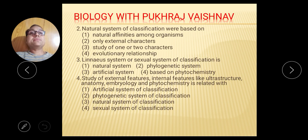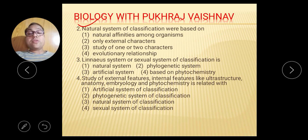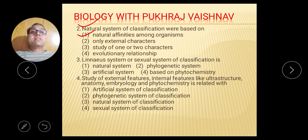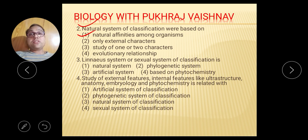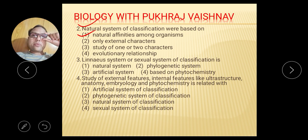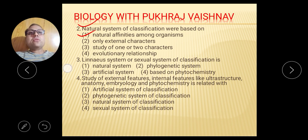Second question: Natural system of classification was based on — obviously it is based on natural affinities. So option number 1 is the right answer. Option number 2, only external character — no, that is the artificial system. Option 3 is also artificial. Option 4, evolutionary or phylogenetic. So the right answer is option 1, natural affinities.